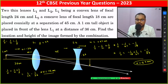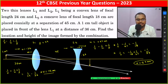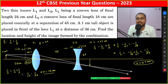Since v is minus 54 centimeters and the concave lens is 45 centimeters from L1, the final image is located 9 centimeters in front of the convex lens L1.